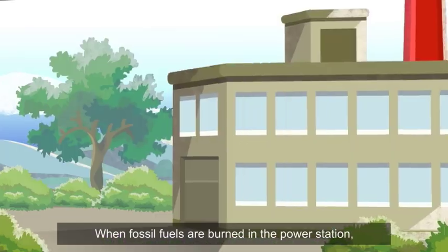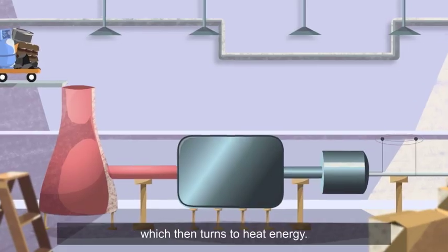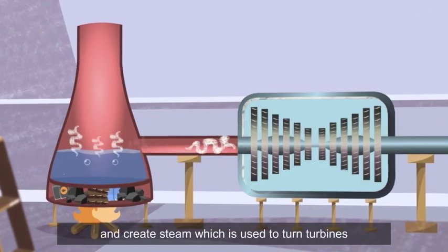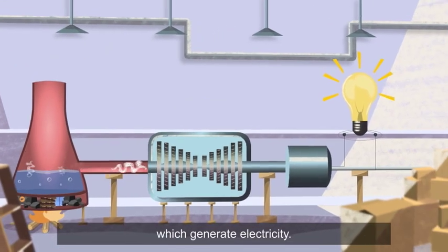When fossil fuels are burned in the power station, they release chemical energy inside them, which then turns to heat energy. This energy is used to boil water and create steam, which is used to turn turbines, which generate electricity.